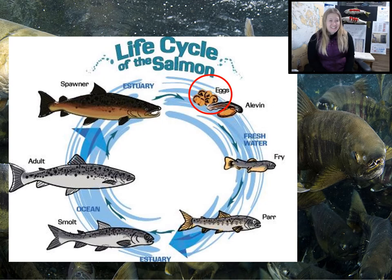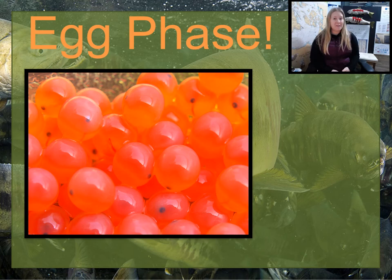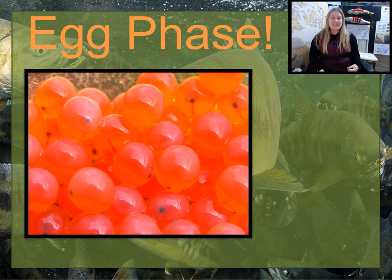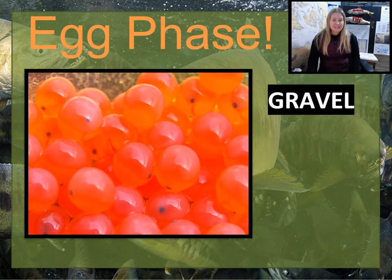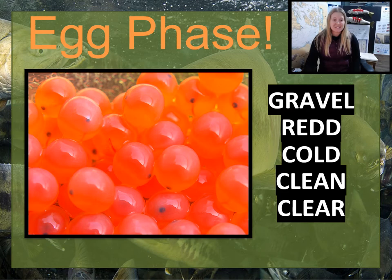Now we're going to look closer at the first stage of the life cycle — the egg phase. Let's turn to page five of our life cycle book. In the fall, salmon start their lives as eggs buried in gravel at the bottom of a freshwater stream. A female salmon can lay over 7,000 eggs. The female beats her tail in the gravel to make a nest called a redd — R-E-D-D, two D's. Those eggs need cold, clean, and clear water to survive.